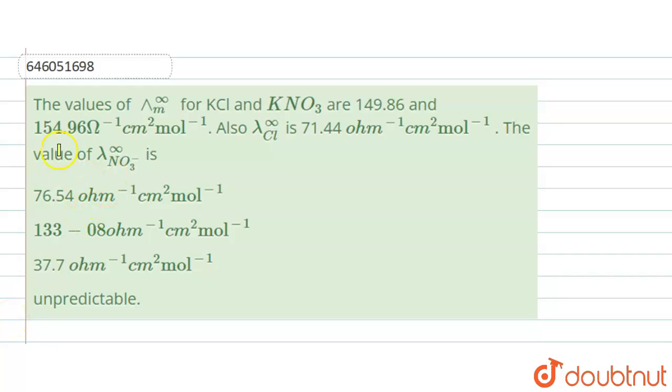So here the question is that the values for the molar conductivity at infinite dilution for the KCl and the KNO₃ are 149.86 and 154.96 per ohm centimeter square per mole. Also here we are given with the limiting conductivity values for the chlorine.